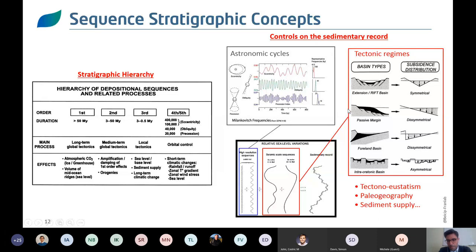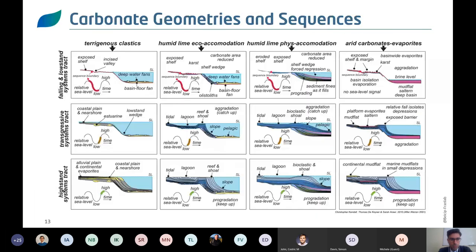All of these impacting parameters on carbonates need to be taken into account when moving from a conceptual geological model into a more numerical model. Geometry is a very important aspect when looking at carbonates and sequence stratigraphy. Different types of settings under which your carbonate builds and develops will influence facies and therefore your reservoir characteristics or petroleum system elements.